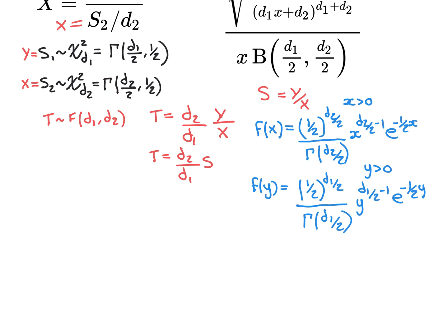So let's write down the PDFs. X is gamma distributed with parameters d2/2 and 1/2. The gamma distribution PDF is 0 for non-positive values and for positive real numbers is given by: beta^alpha over Gamma(alpha), times x^(alpha-1), times e^(-beta*x). Plugging in alpha = d2/2 and beta = 1/2, we get: (1/2)^(d2/2) over Gamma(d2/2), times x^(d2/2 - 1), times e^(-x/2).